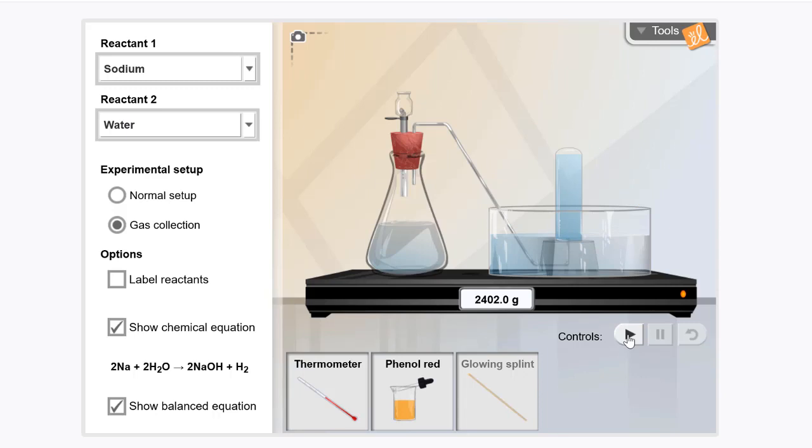Finally, for our last experiment, let's click reset and drag the phenol red next to the flask. Looks like the liquid in the flask is neutral. Let's click play and wait for the reaction to end.